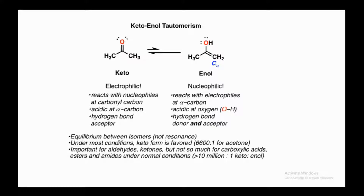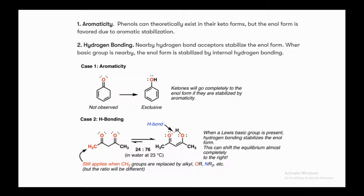This is an equilibrium between isomers, not resonance. Under most conditions, the keto form is favored — important for aldehydes and ketones, but not so much for carboxylic acids, esters, and amides. However, in some cases the enol form is more stable than the keto form, which we will examine in detail.